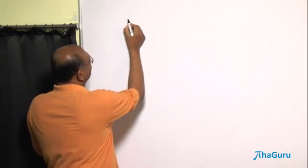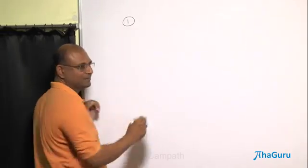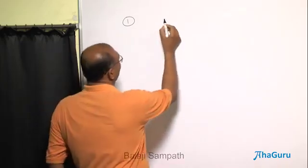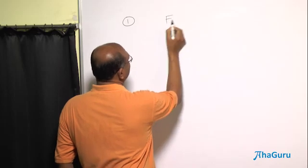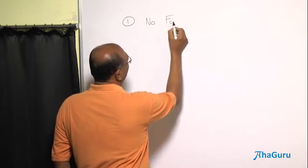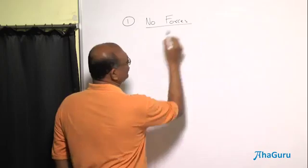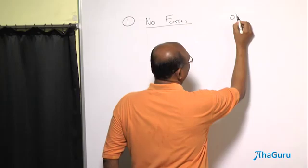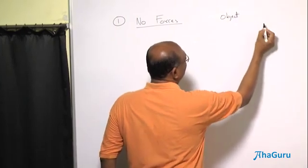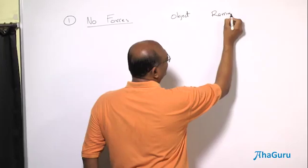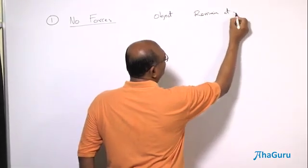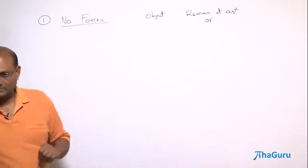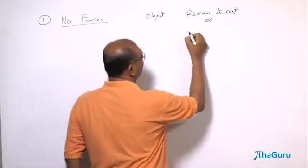Newton's First Law starts with a very simple statement. The statement is: if you let an object free — that is, if there are no forces on an object — then that object will either remain at rest or keep moving with constant velocity, that is, move with uniform velocity.